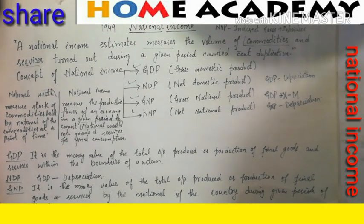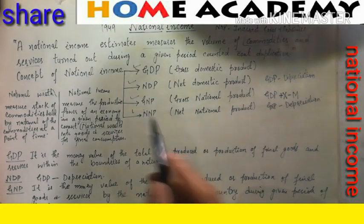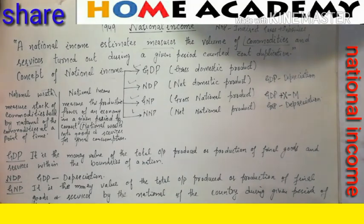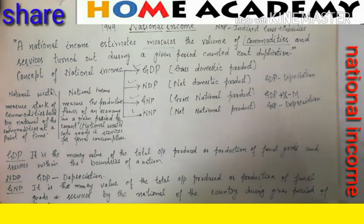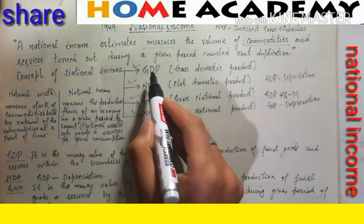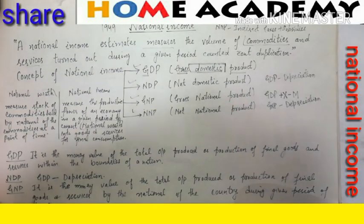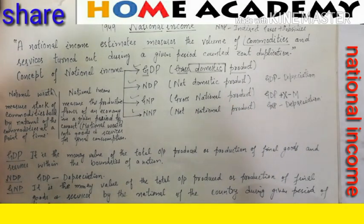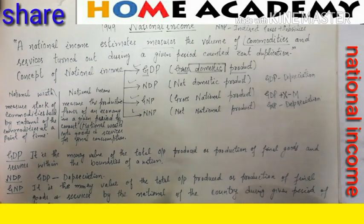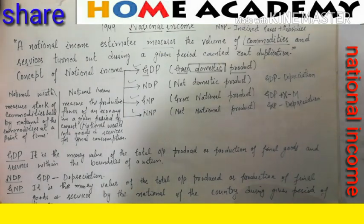Now the main concept under national income is GDP — Gross Domestic Product. You must have heard 'GDP rate gir gaya, GDP badh gaya.' GDP stands for G = Gross, D = Domestic, P = Product. Focus on the word 'domestic.' Definition: GDP is the total money value of all the final goods and services produced within the geographical boundaries of the country.